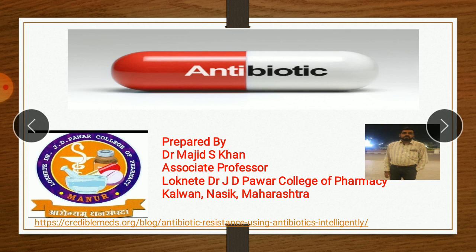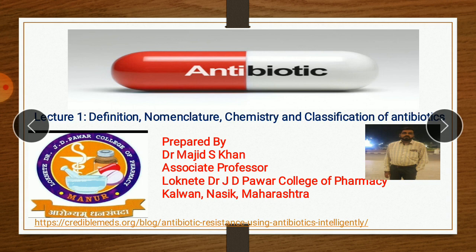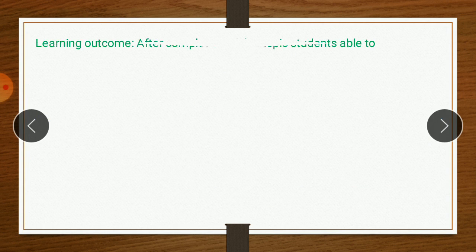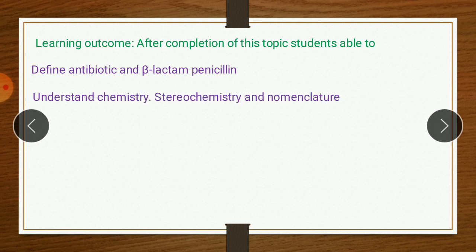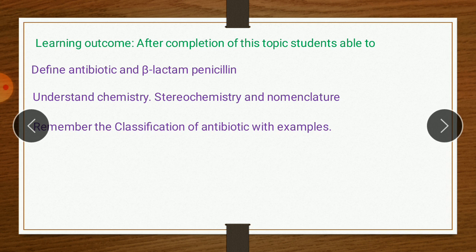I welcome all of you in this new chapter, Antibiotic. In this video — Lecture 1 — we will cover the definition of antibiotic, nomenclature of antibiotic, chemistry including stereochemistry of antibiotic, and classification of antibiotic. The learning outcome: after completion of this video, students will be able to define antibiotic and beta-lactam penicillin, understand chemistry, stereochemistry, and nomenclature of antibiotic, and remember the classification of antibiotic with examples.